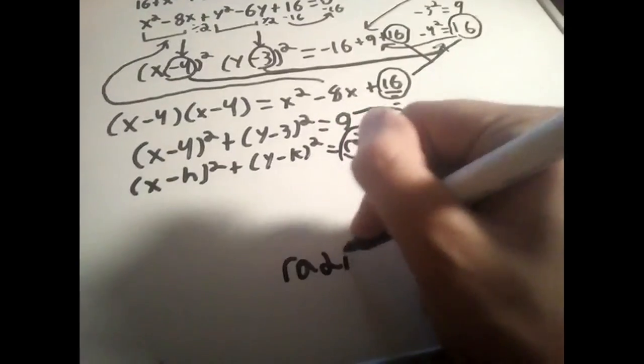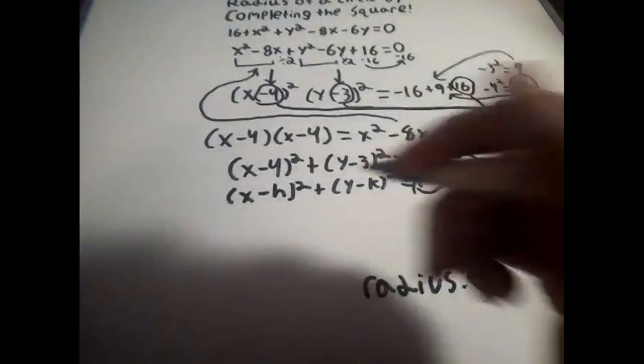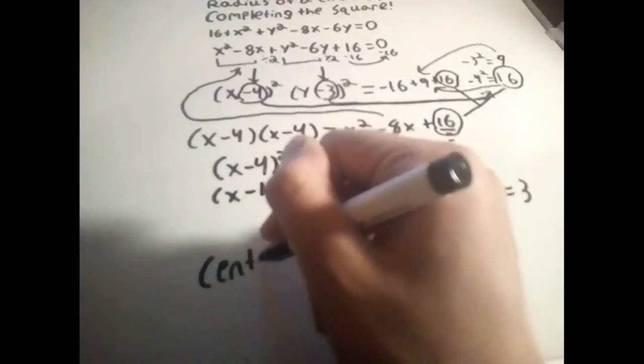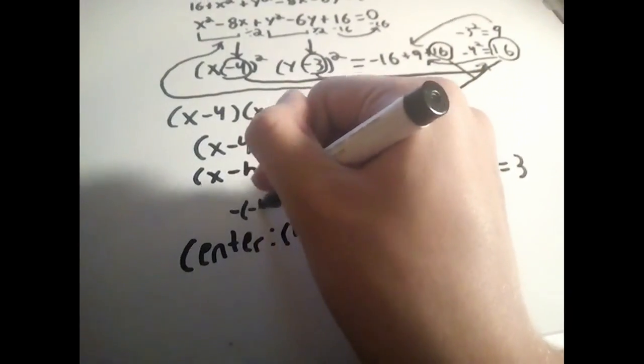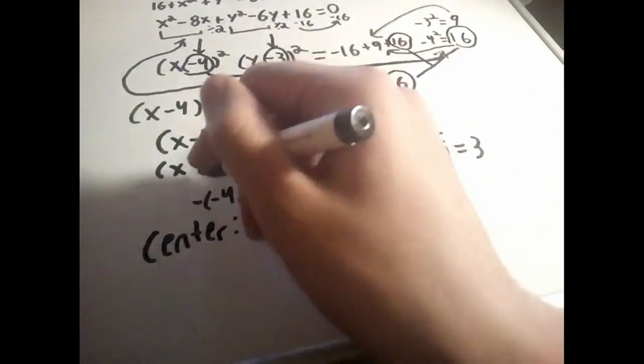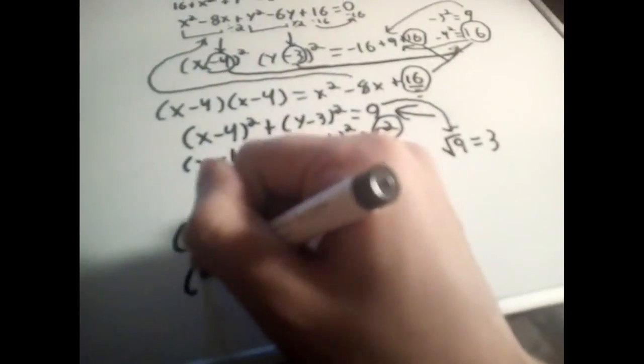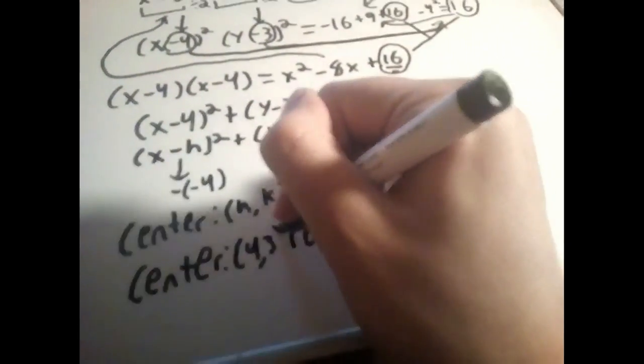Now that we have our radius, we can find the center too. For this, we need to remember that the center is in the form h comma k. So we can plug in the values from our new equation into the circle equation, or you can just flip the signs. After this, you find that our h is 4 and our k is 3. So putting this in the correct form, we have 4 comma 3, or the center of the circle.